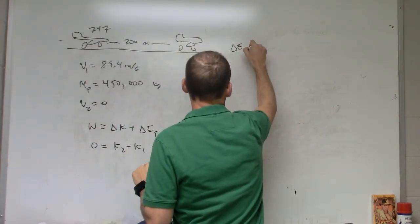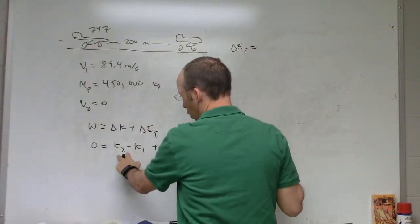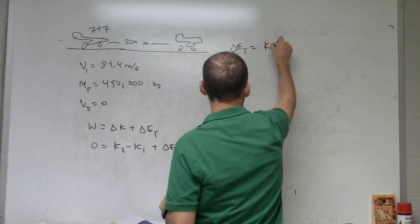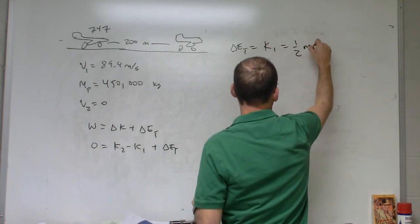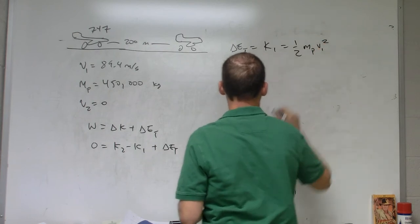Delta E thermal equals, well, k2 is zero, so it's just going to be k1, one half mass of the plane, V1 squared.